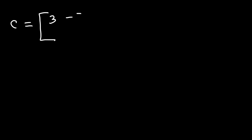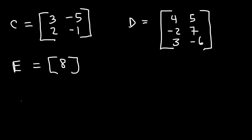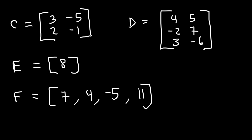Matrix C has the numbers 3, negative 5, 2, negative 1. Matrix D contains 4, 5, negative 2, 7, 3, and negative 6. Matrix E contains one number: 8. Matrix F has 7, 4, negative 5, and 11. Matrix G has 3, 1, 7, 2, 6, negative 4, 9, 0, 3.